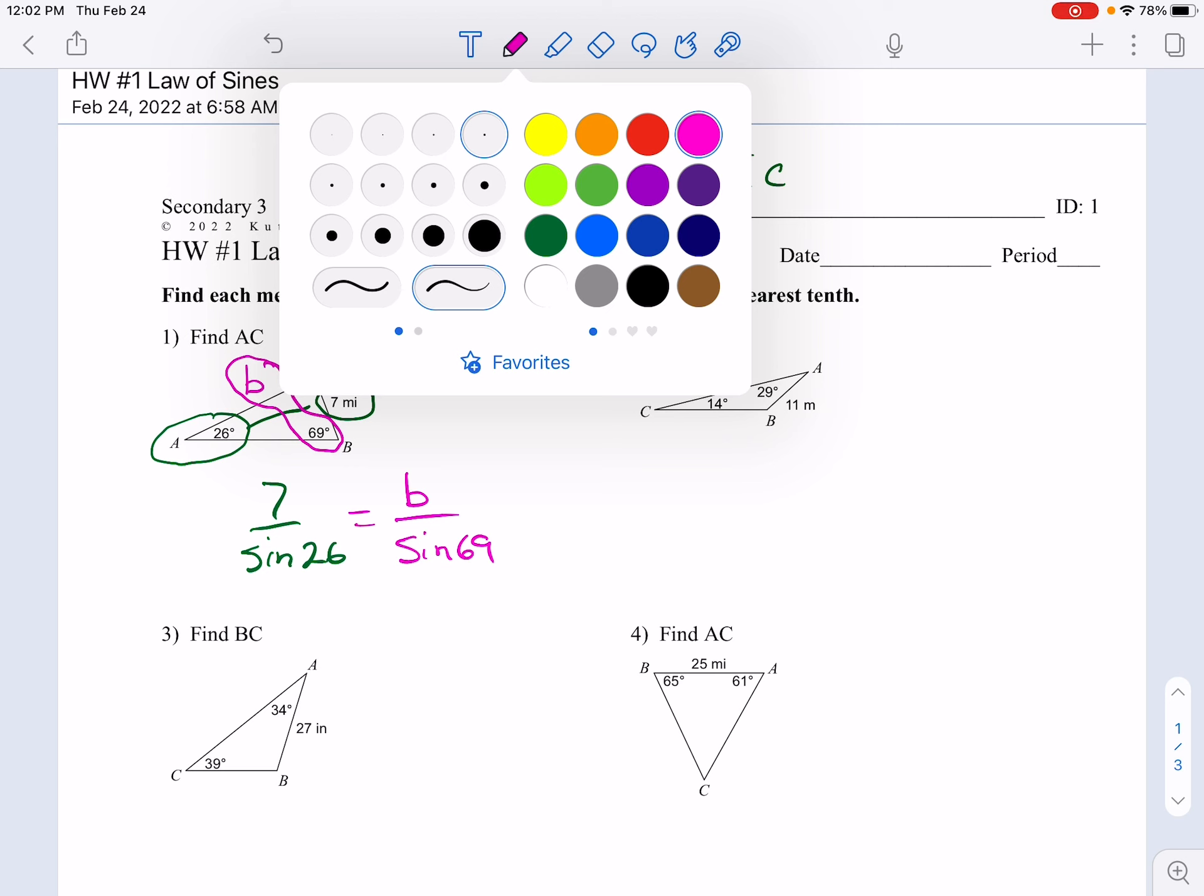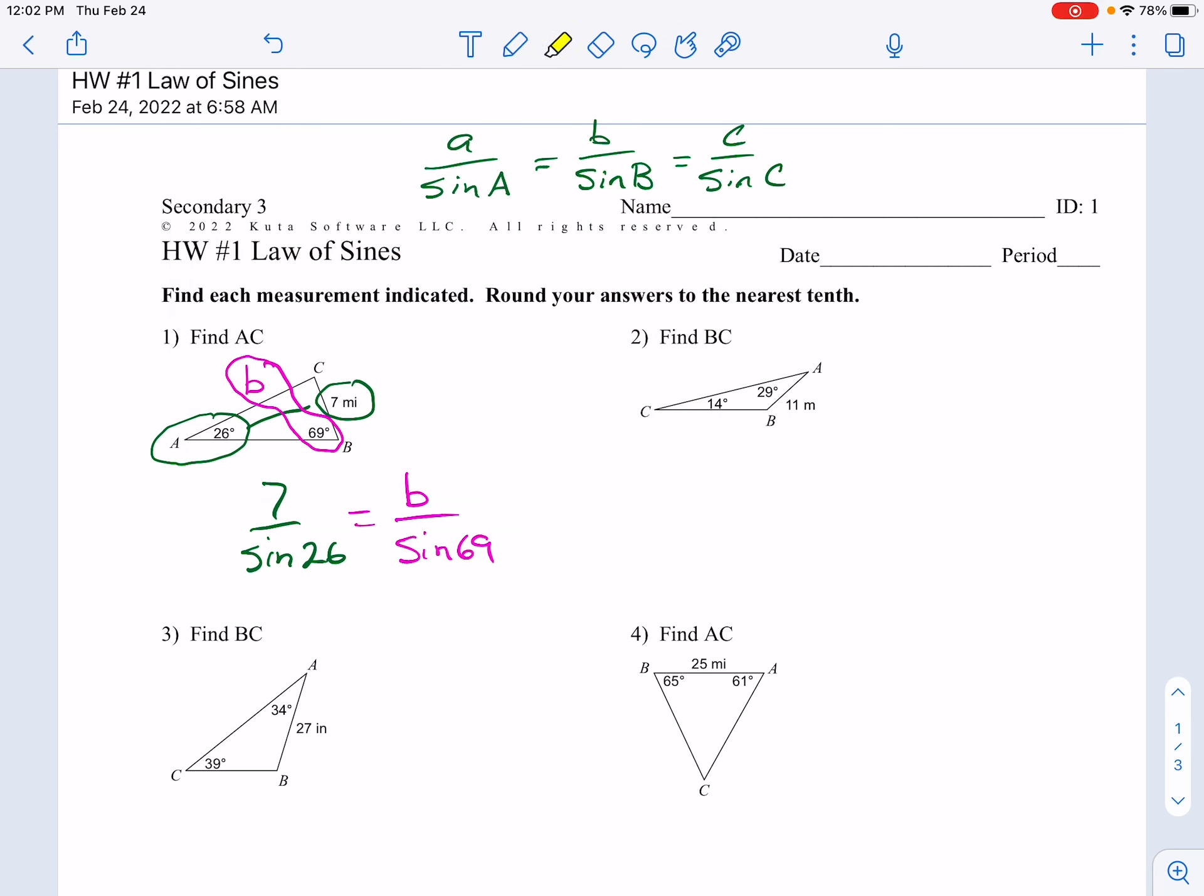To solve a proportion, we cross-multiply. We multiply the diagonals, and they will always be equal. So 7 times the sine of 69 is equal to little b times the sine of 26. To get b by itself, we divide by the sine of 26.